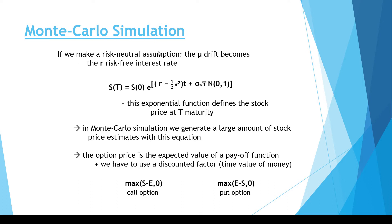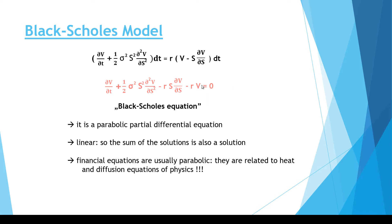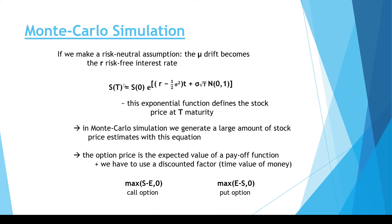If we make a risk-neutral assumption, then the mu drift becomes the risk-free interest rate. As discussed in the Black-Scholes model, this equation has several parameters such as R (the risk-free interest rate) and the volatility, but it does not contain the mu drift. So the solution for the stock price will not contain mu either. This exponential function defines the stock price at time T maturity — this is the stock value at expiry.